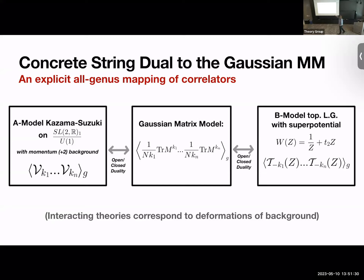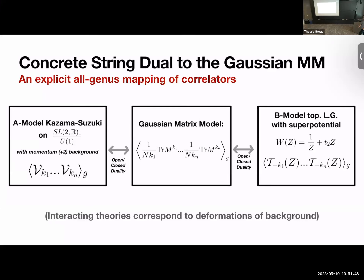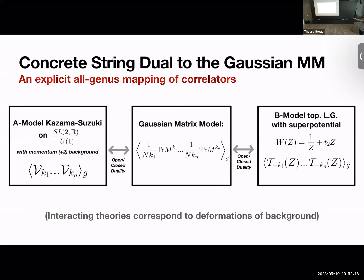Every trace M to the k maps to a vertex operator inserted in the A-model description. The harmonic oscillator potential in the matrix model translates to a specific superpotential for the B-model. The general logic isn't true only at the free point — we can incorporate interactions by turning on a different background and deforming the superpotential, giving a map from a general interacting matrix model to both string descriptions.